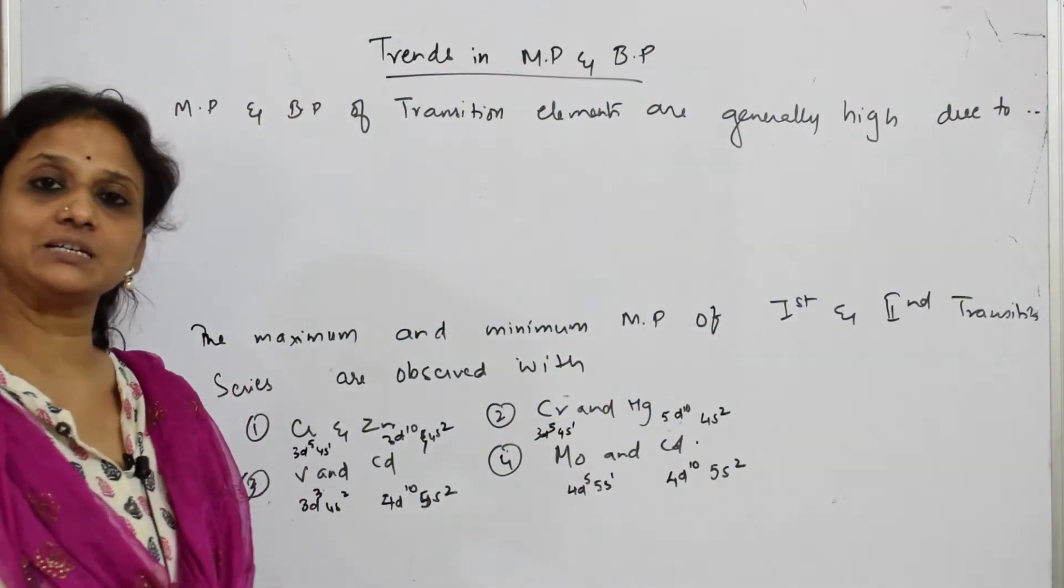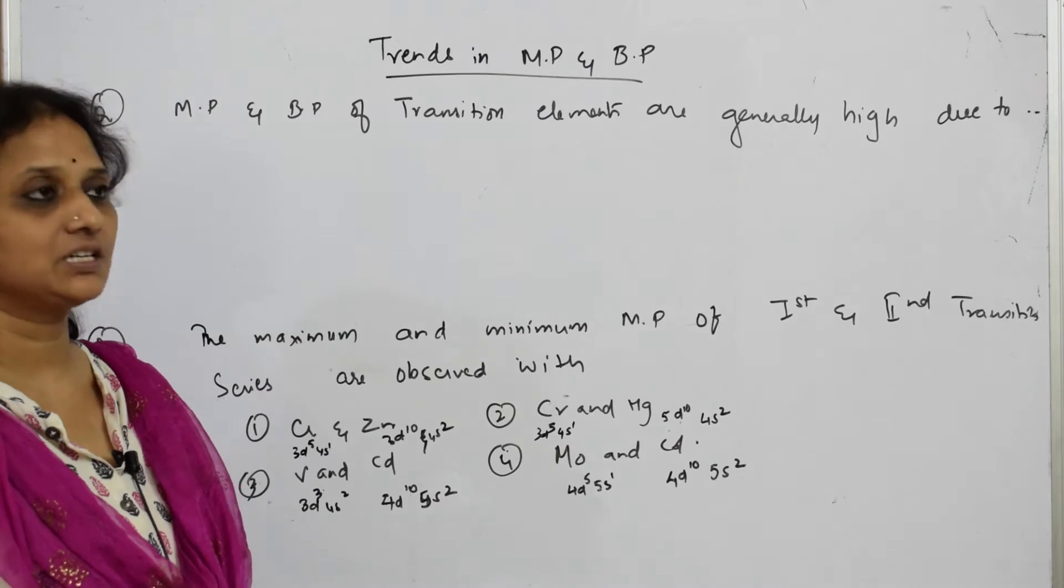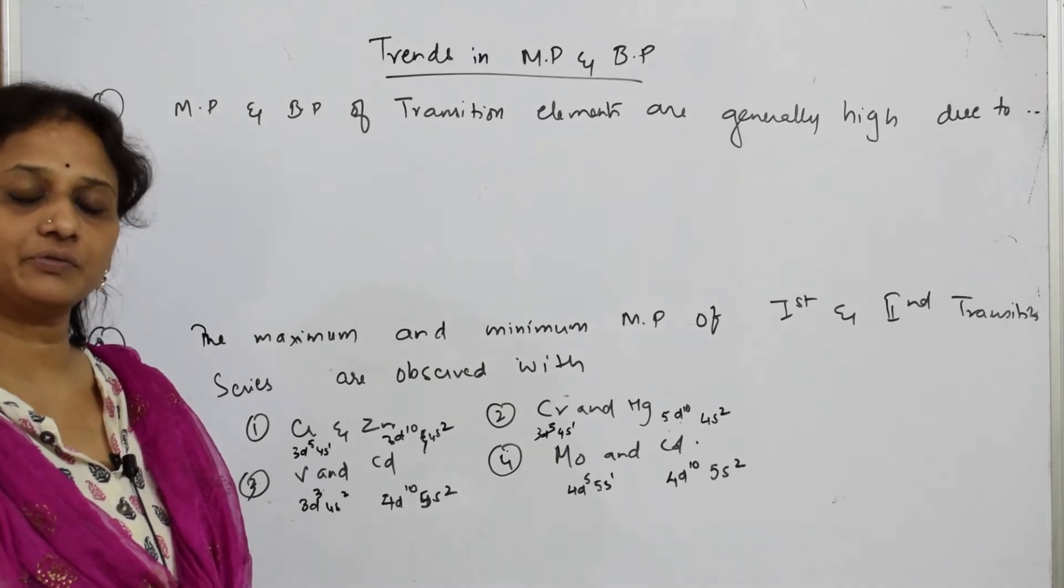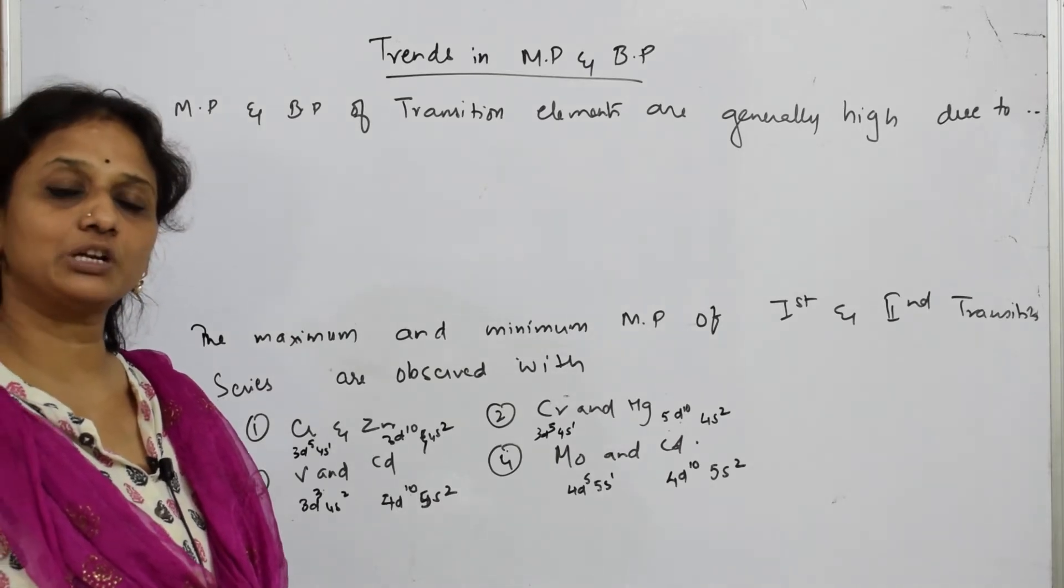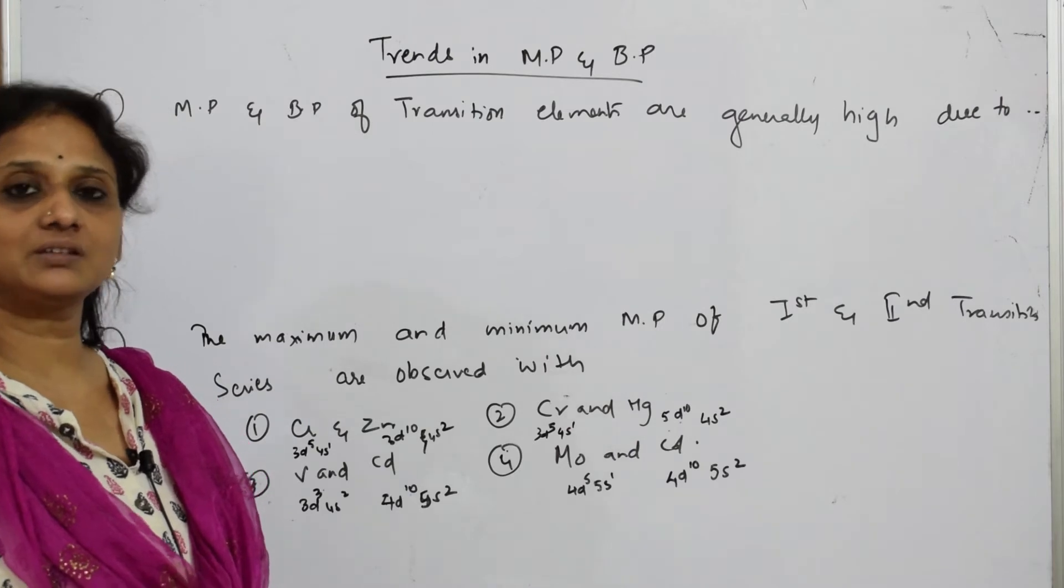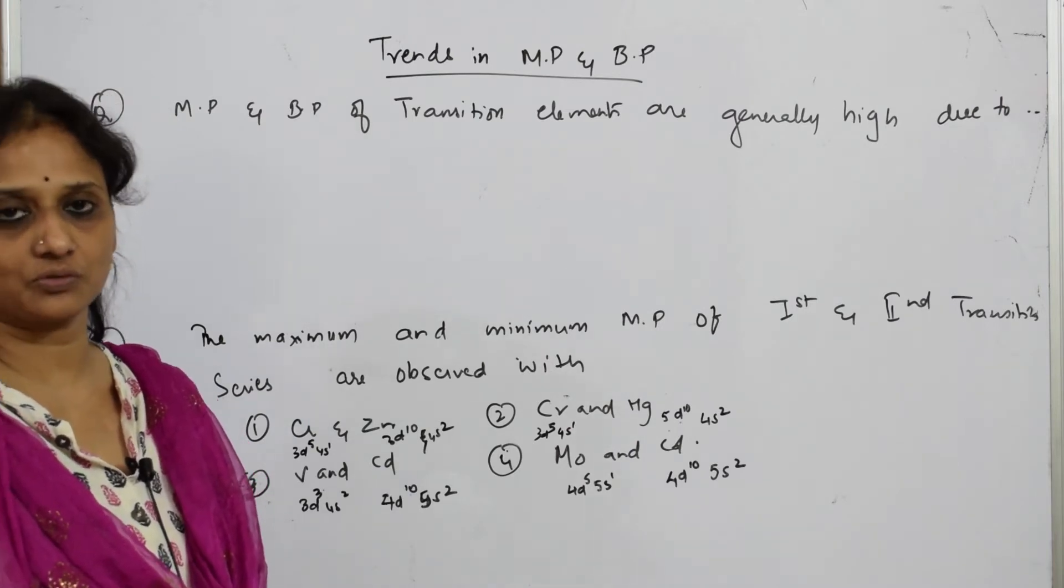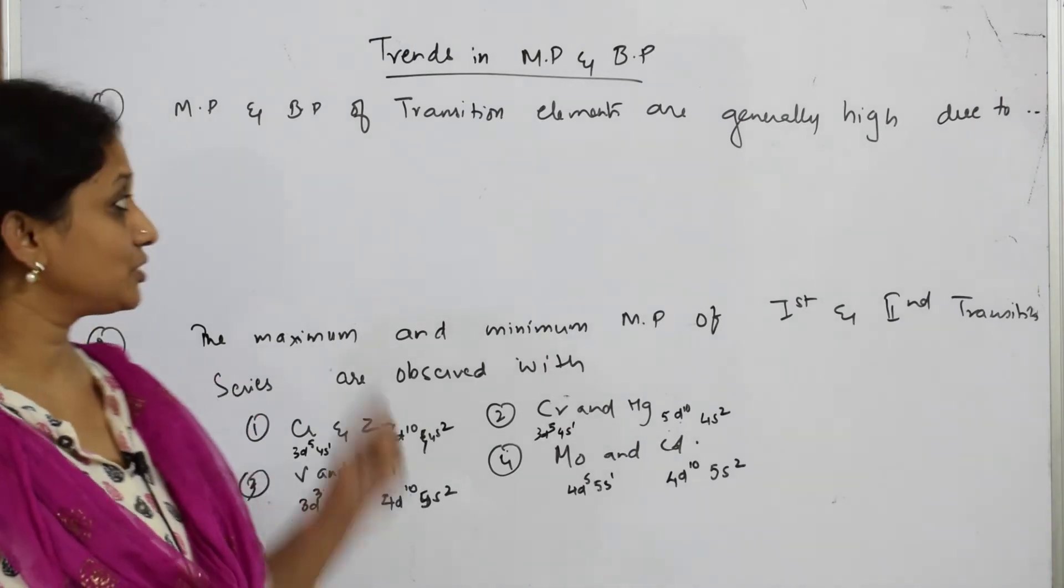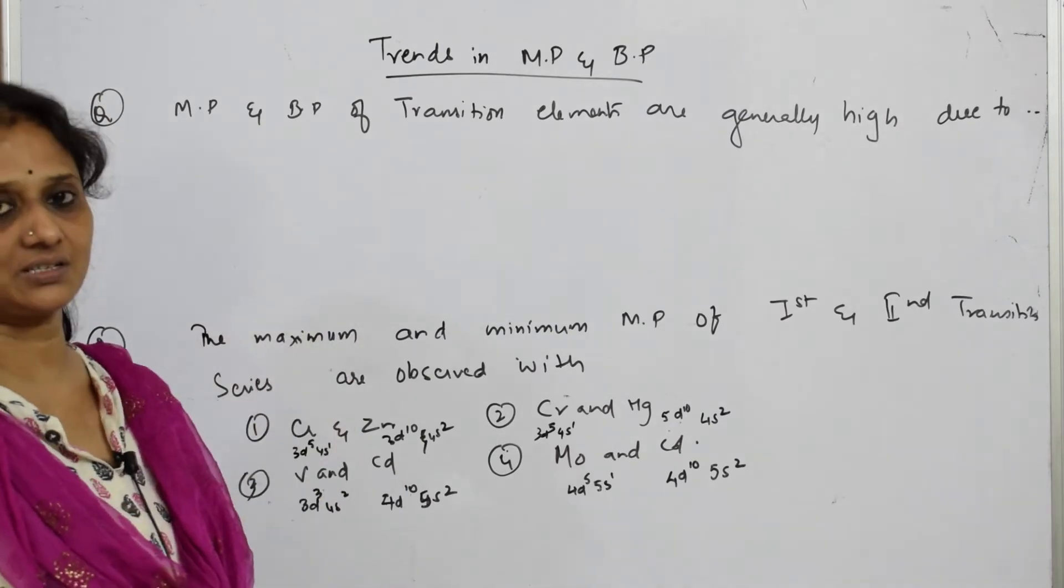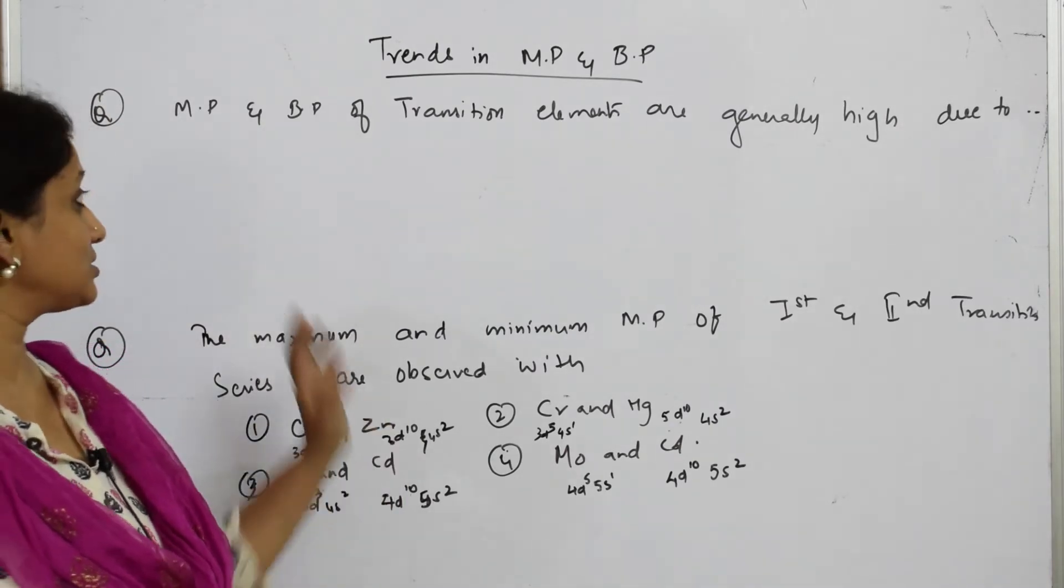Let us do one more question on the melting point and boiling point concept. What did I say? When is the melting point and boiling point high? Whenever there is number of unpaired electrons more or the number of valence electrons more. They are asking this question generally.